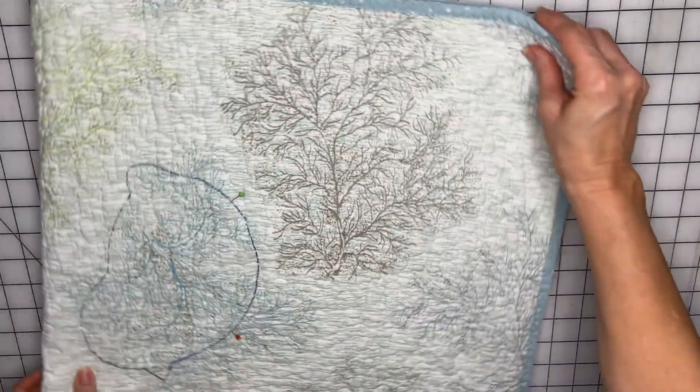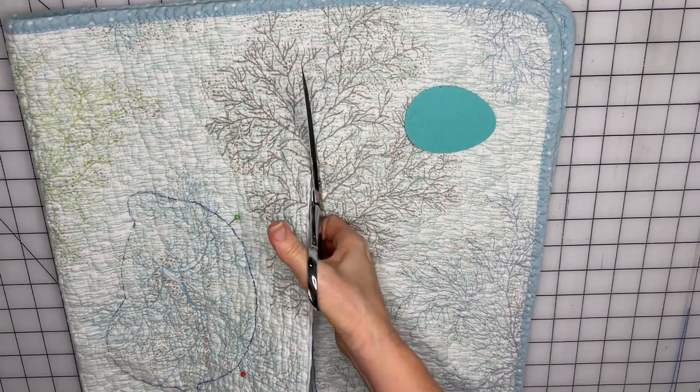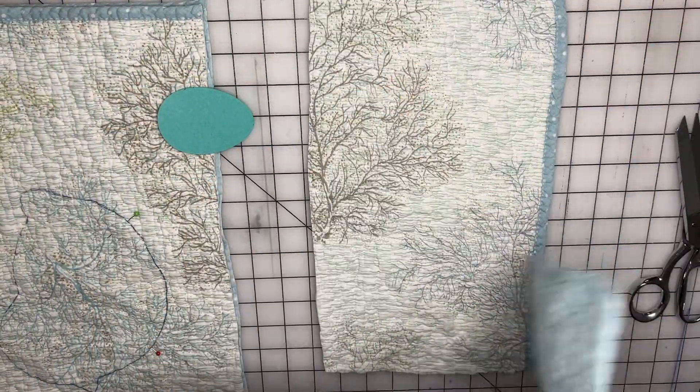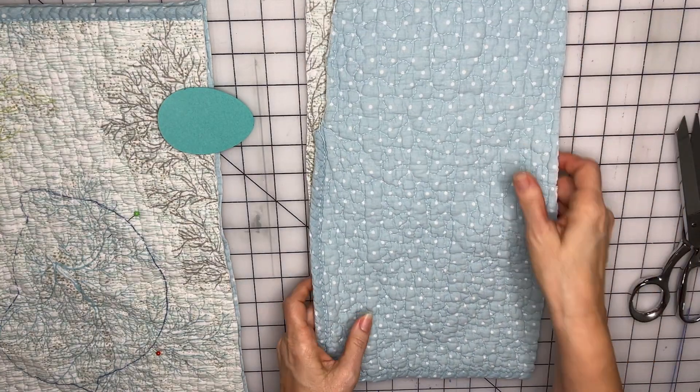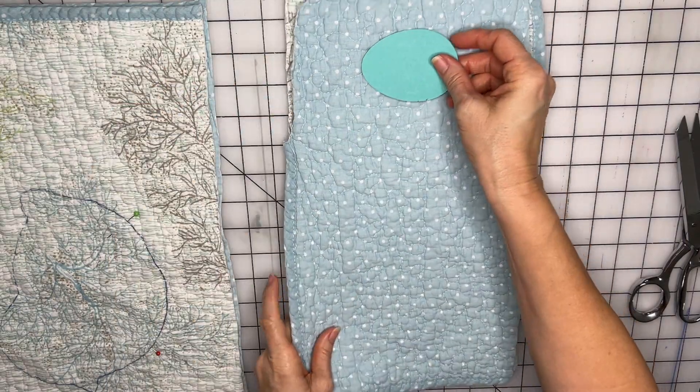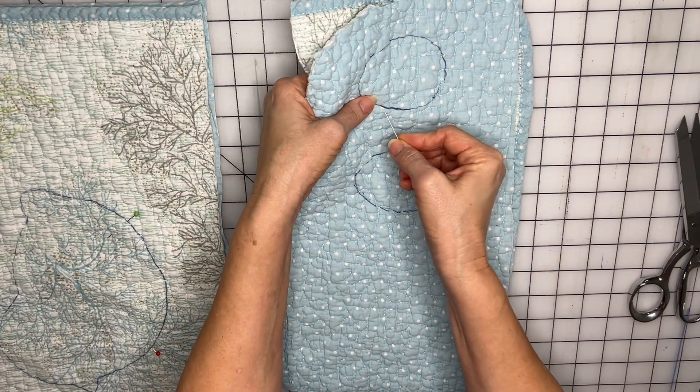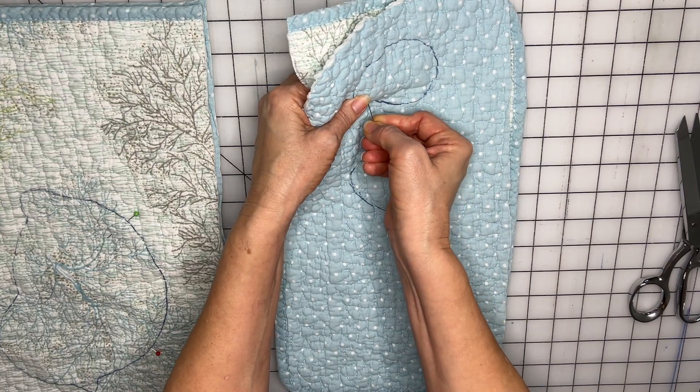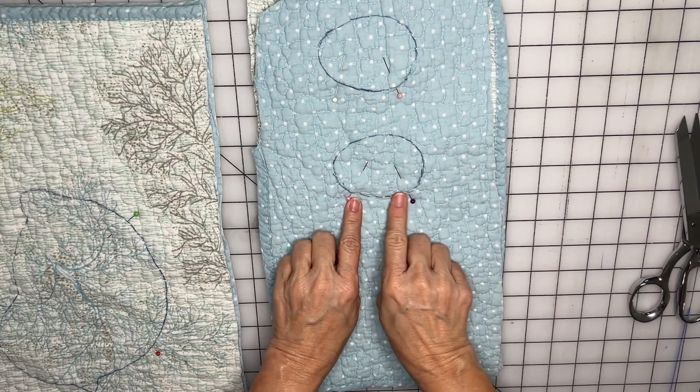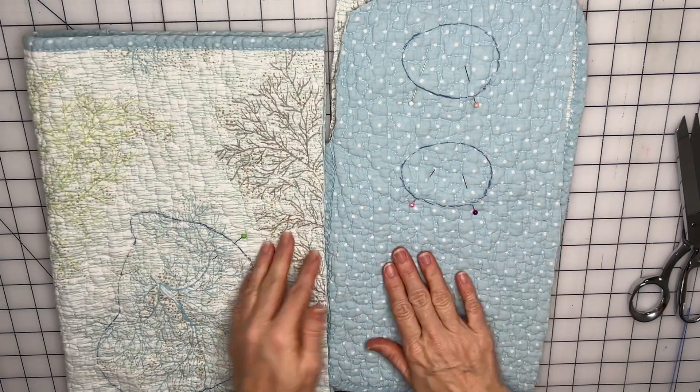But before we head to the sewing machine, I want to go ahead and trace out my eggs. Go ahead and just trim this away. And now since I want my eggs to be this color, I'm going to put these two layers together like that and trace two eggs. And then place a pin to leave an opening for stuffing. Okay, we're going to leave an opening here for stuffing and an opening here. Start here, sew all the way around. Okay, let's head to the sewing machine and sew these up.